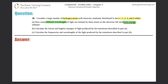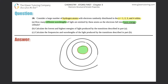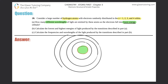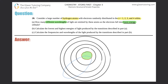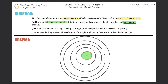It will help us greatly if we draw a picture. Over here I have my nucleus, and they want n from 1 to 4, so I should have four shells surrounding the nucleus. So here's 1, 2, 3, and 4. This is the nucleus and this is hydrogen, and now we have n equals 1, n equals 2, n equals 3, and n equals 4.